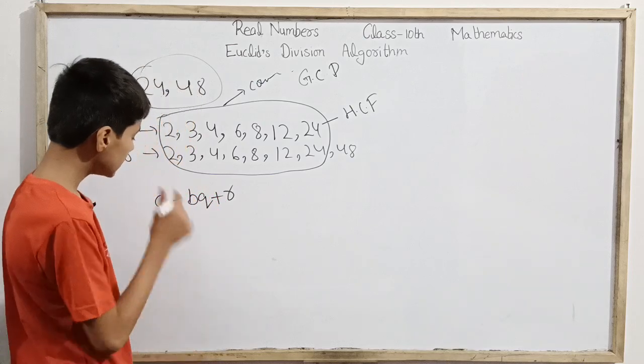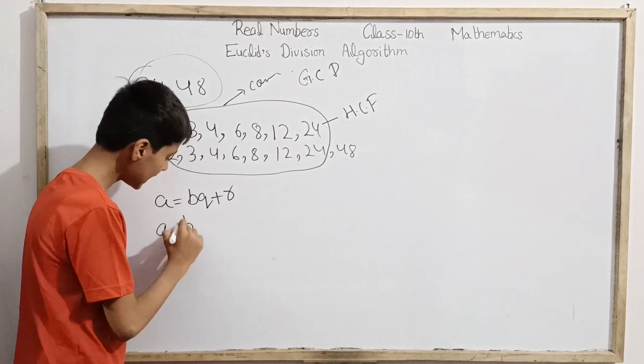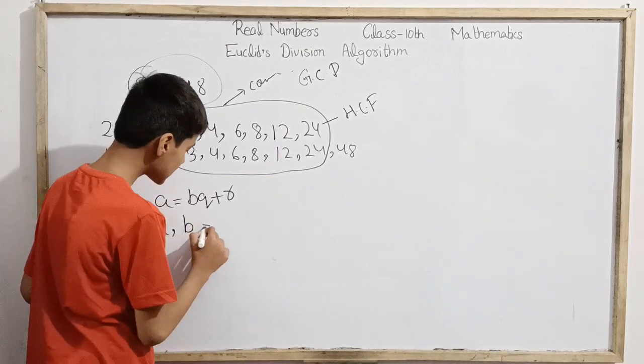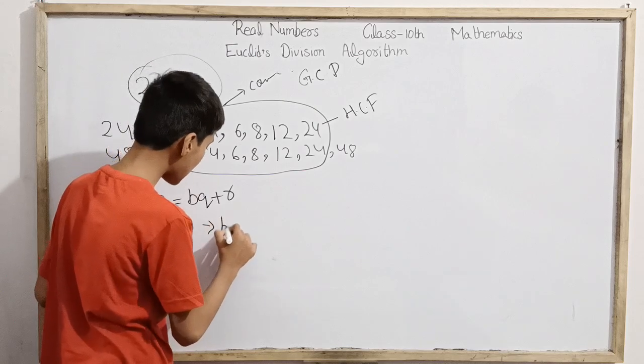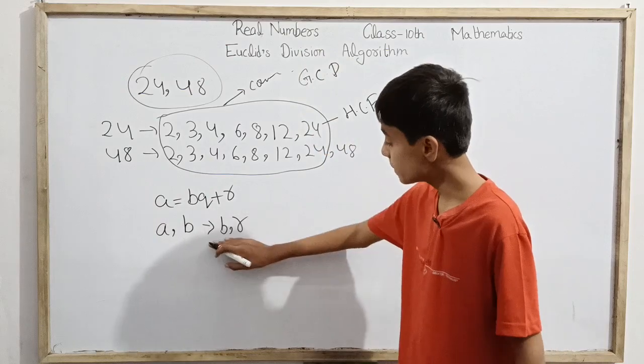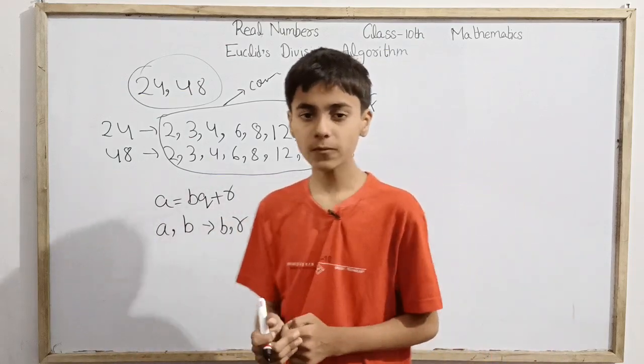According to this theorem, the common divisors of a and b are the same as the common divisors of b and r. This is the theorem we need to prove.